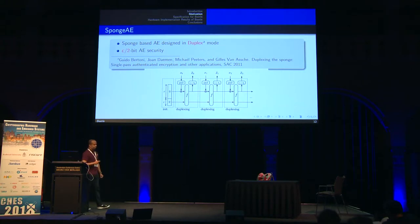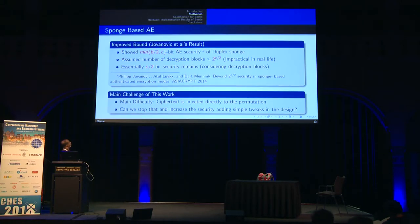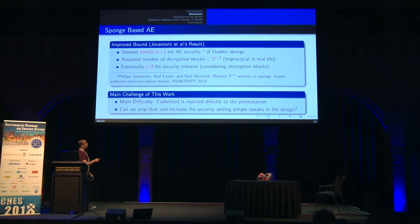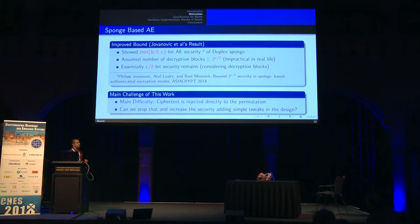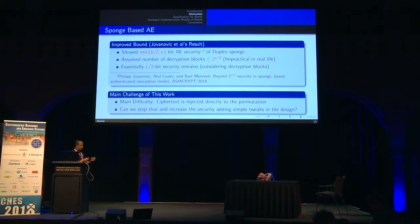The security for sponge-based AE has been proven to achieve c/2-bit AE security. Later, Jovanovic et al. tried to increase this to min(b/2, c)-bit AE security for the duplex sponge and achieved it, but with the inconvenient assumption that the number of decryption blocks is bounded by 2^(c/2), which is very impractical since we normally allow the adversary to make as many forging attempts as possible. So essentially it still has c/2-bit AE security. The main difficulty is that ciphertext is directly injected as feedback to the next permutation call, so the adversary can easily control the feedback by controlling ciphertext blocks during decryption queries, resisting proofs beyond c/2-bit security.